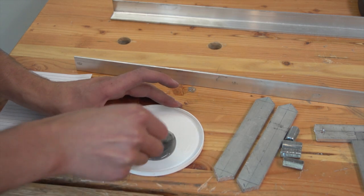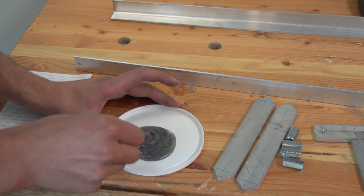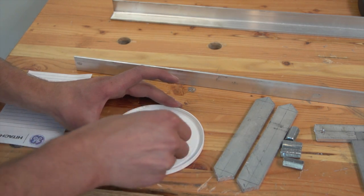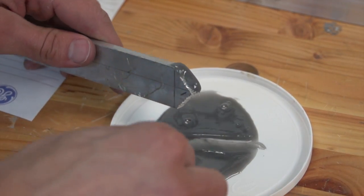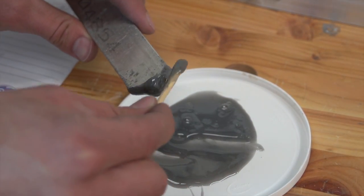Mix the epoxy on a clean piece of cardboard or plastic. Ensure an even and thorough mixture. Apply epoxy to the ends of the side supports and set them in place between the angle aluminum.